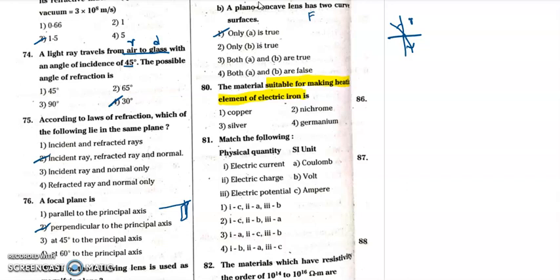Question 80: the heating element of an electric iron is made of nichrome, which is nickel plus chromium. That is why question 80, the second option is the correct answer.